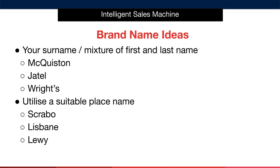So how can you create your own coined brand name? The good news is that it's actually very simple. First, try using your surname or a mixture of your first and last name — this alone could help you create a brand name. Next, try utilizing a suitable place name; rural names are ideal for this. As you can see from the examples, these brand names are quite vague in nature but they work well for us. Go ahead and try to create a brand name for yourself — you have creative freedom here, so go for it.